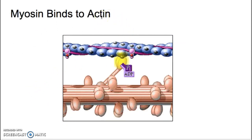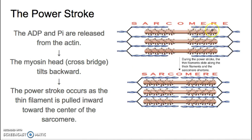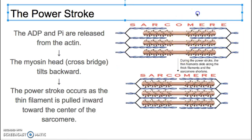Here is that high-energy myosin binding to actin, with the ADP and phosphate group still attached. When those myosin heads bind to actin, they grab on and pull the Z-discs or Z-lines towards the center of the sarcomere. The Z-discs are pulled towards the center, and that shortens the sarcomere — we can see that they've gotten closer together.